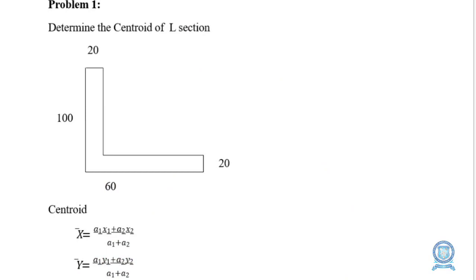Now we will solve some problems regarding centroid. First, we will solve a problem based on L section. Determine the centroid of the L section as given in the figure. The base rectangle has dimensions 60 × 20 and the top rectangle has dimensions 100 × 20. If we take the base rectangle as 60 × 20, then the top portion becomes 80 × 20.